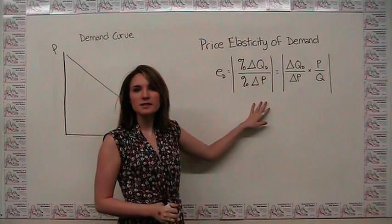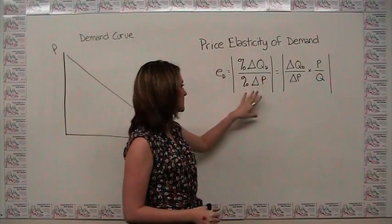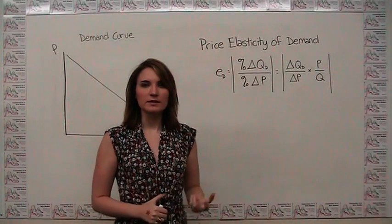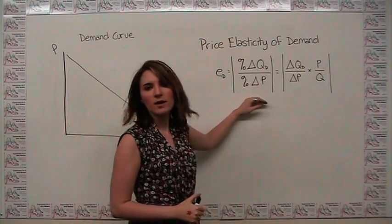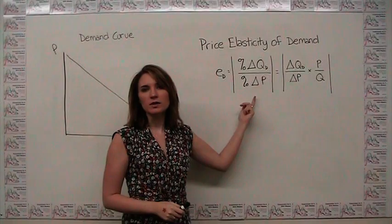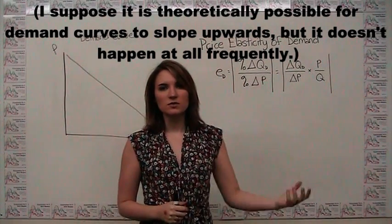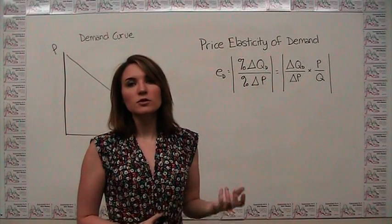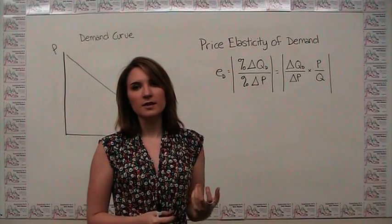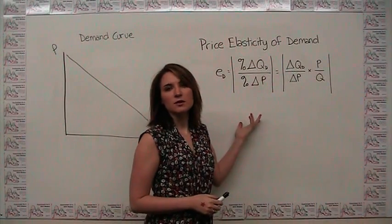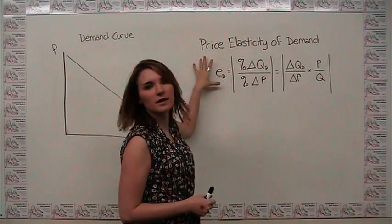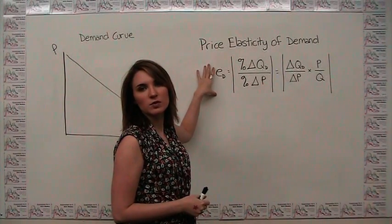You'll notice I put absolute value signs around the percentage change formula. The reason is that for price elasticity of demand, you usually see it written as a positive number. Since quantity demanded and price move in opposite directions — as we can see from the downward-sloping demand curve — we would always get a negative number, so it's easier to represent it as the absolute value. We do this only for price elasticity of demand; for other types of elasticity, the sign conveys information. Also note that elasticity has no units — they cancel out — so elasticity is a pure number.